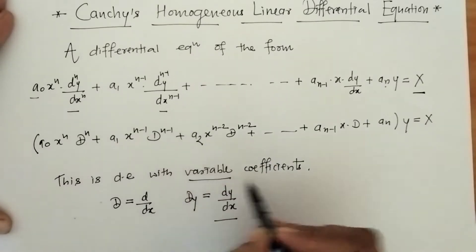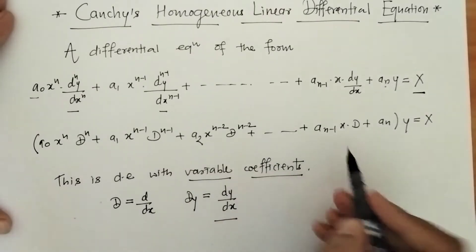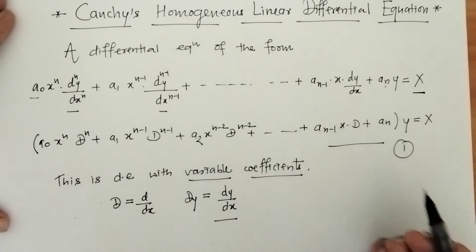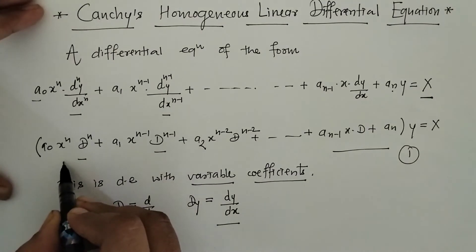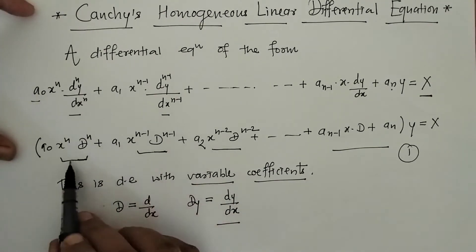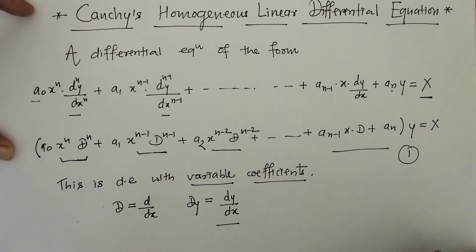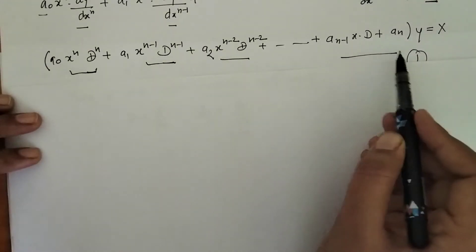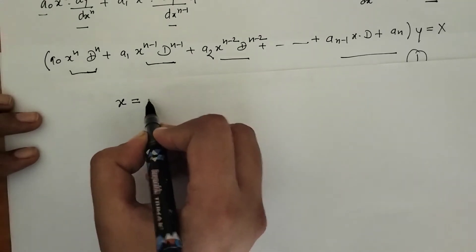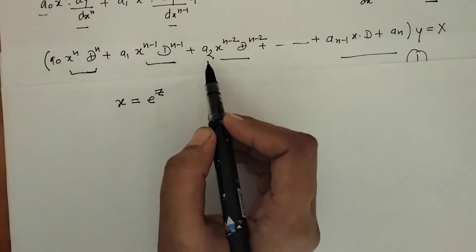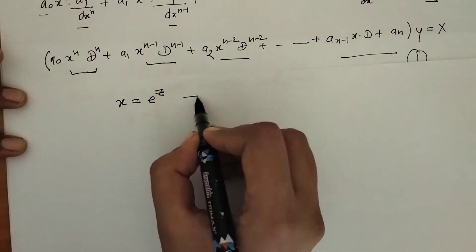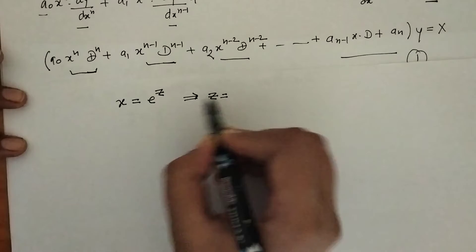This is a differential equation with variable coefficients and we have to convert it to one with constant coefficients so that we can find its solution. For this we have to find the values of the operators. The independent variable is x. To find the values of these operators, we do the substitution x equals e raised to z, which means the differential equation gets converted into variable z.